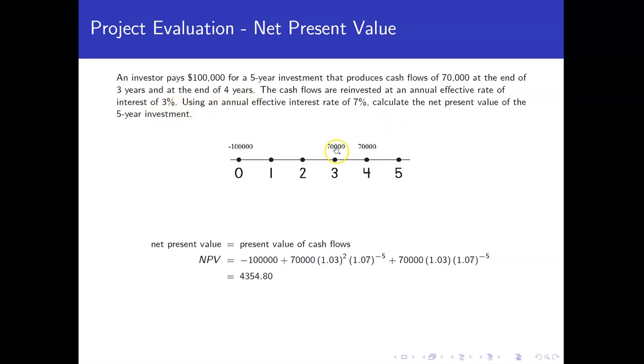So in this one again we're going to reinvest the seventy thousand at each of time three and time four until we get to time five. And using a seven percent interest rate, we want to see what the net present value of these cash flows are.